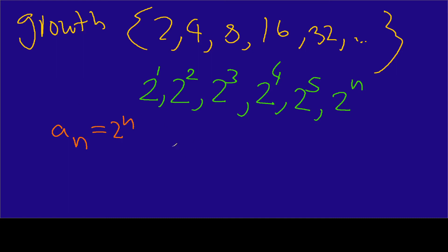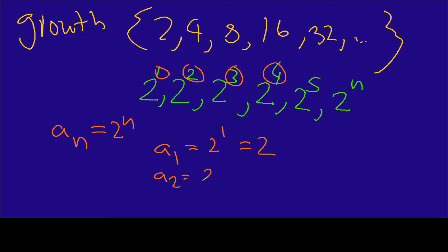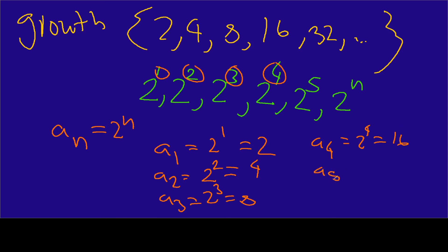Let's work this out. The term of the sequence — a sub 1, a sub 2, a sub 3, a sub 4 — works as follows: a sub 1 equals 2 to the first power, which equals 2; a sub 2 equals 2 to the second power, which equals 4; a sub 3 equals 2 to the third power, which equals 8; a sub 4 equals 2 to the fourth power, which equals 16; and a sub 5 equals 2 to the fifth power, which equals 32.